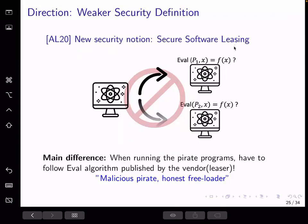Therefore, when we test if a pirate program is successful, we use the evaluation function, evaluation algorithm published by the vendor, or say in the original program. And this is in contrast to what we mentioned before for copy protection. In copy protection, we just use a universal quantum circuit to run on any unitary and a quantum state given by the adversary. So SSL, secure software leasing, is actually a weaker security notion in that we restrict the possible attacks from the pirate by asking him to produce pirate programs that will only run correctly when we use the evaluation instructions.